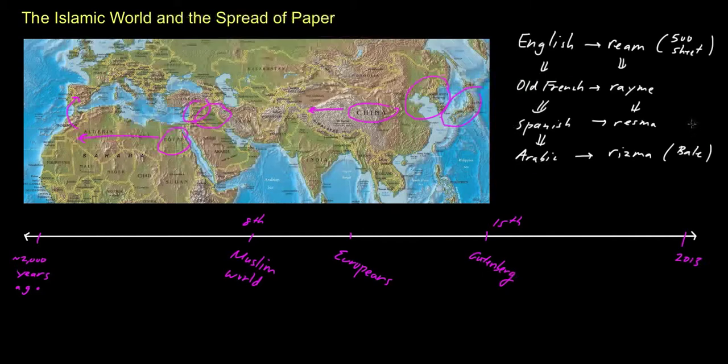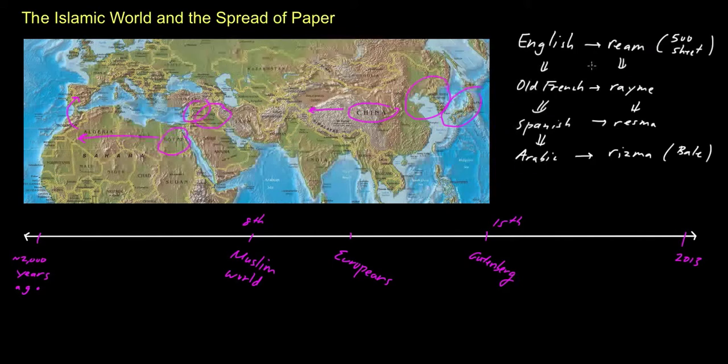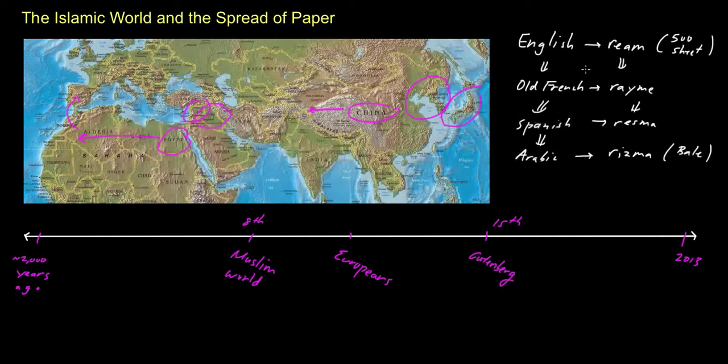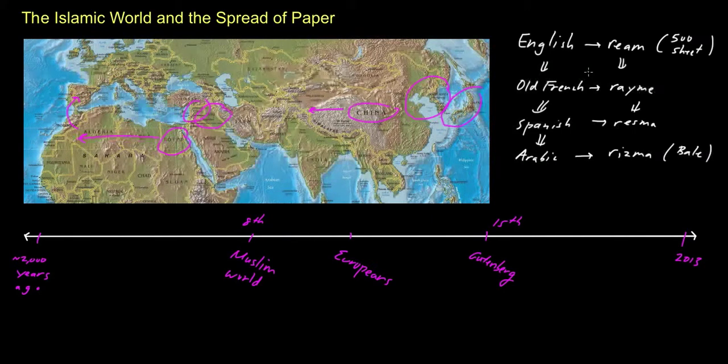Now, one possible reason, and obviously you can tell from this etymology that clearly the Arab world played an important role in having coined this important concept of a bale, which we use today, but one possible reason why the role of the Arab world or the Islamic world in the development of paper or the dissemination of paper has been largely expunged from the history books or otherwise ignored in many sources might in part be due to the fact that paper actually developed in Islamic lands, or the way that it developed in Islamic lands was different from the way that it developed in European lands.